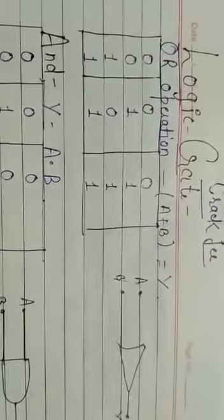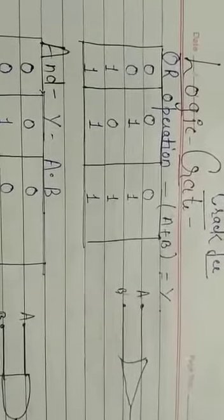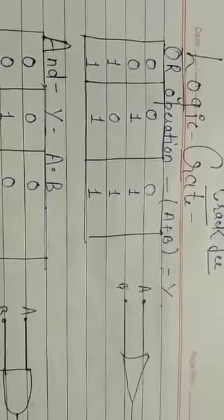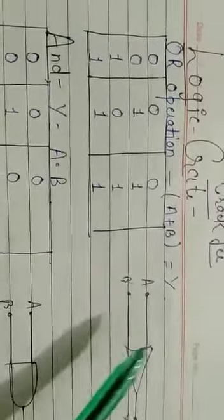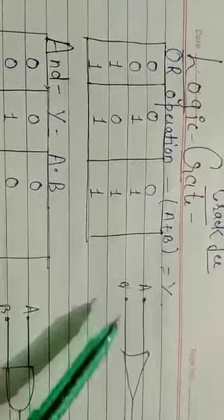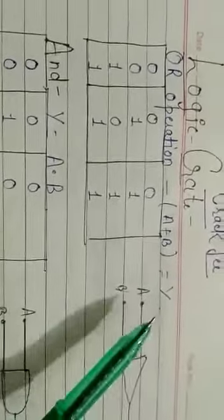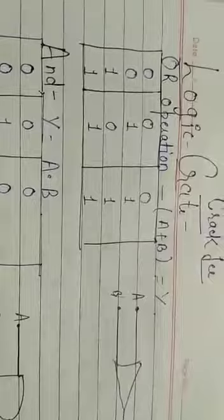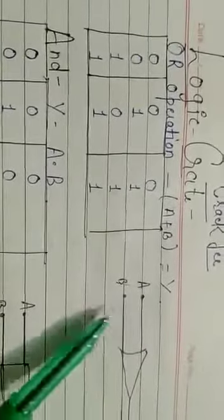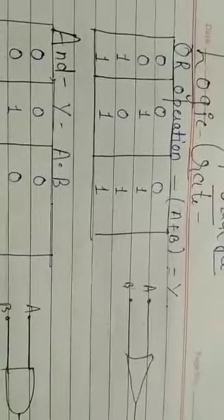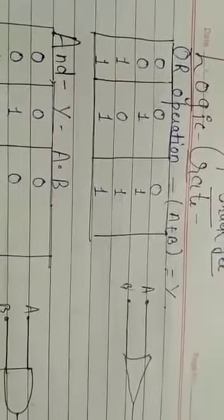There are multiple logic gates. The first one is the OR operation, which means Y equals A plus B. If we have two inputs A and B, and Y is the output, then for inputs 0,0 the output is 0; for 0,1 the output is 1; for 1,0 the output is 1; and for 1,1 the output is 1. This is the OR operation.